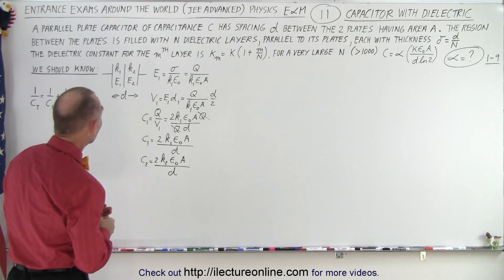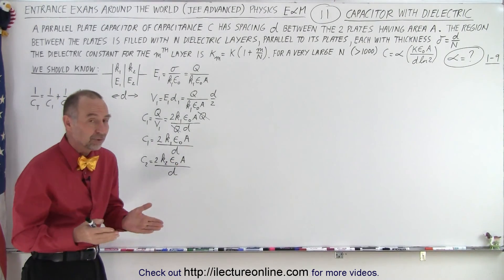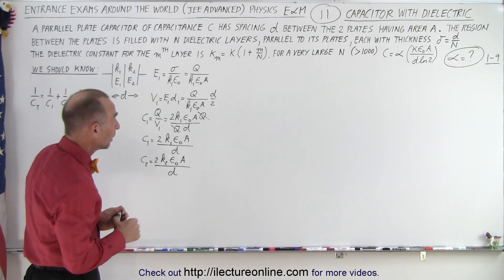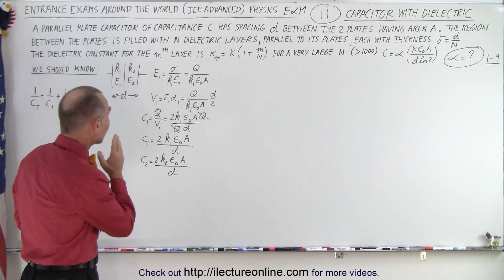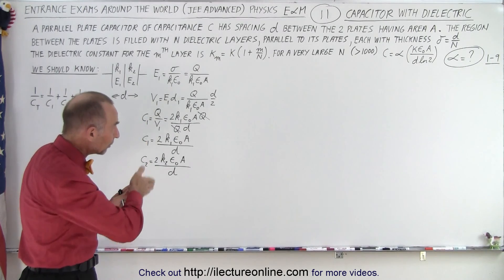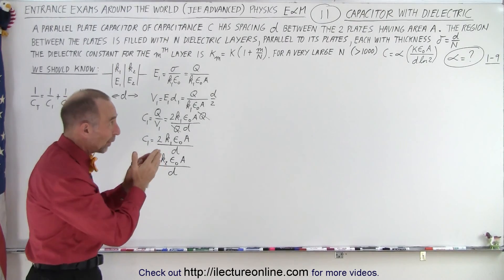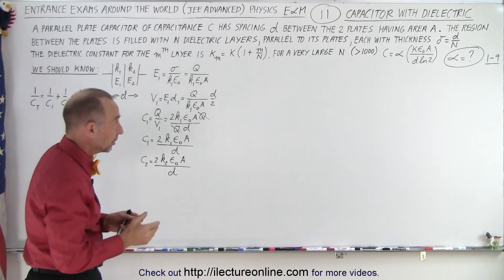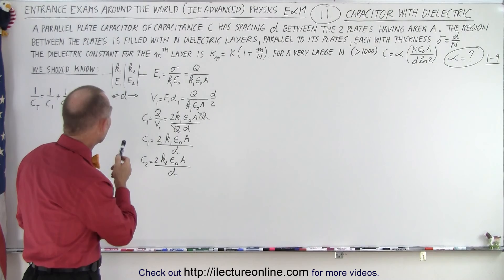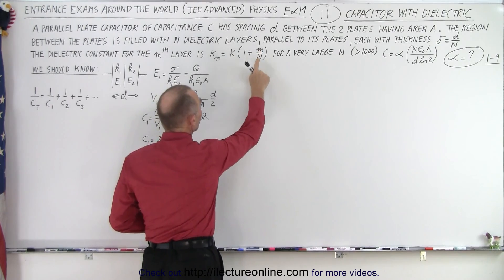We have a parallel plate capacitor of capacitance C with spacing D between two plates having area A. The region between the plates is filled with N dielectric layers, all parallel to the plates, each with the same thickness D over N. The dielectric constant for the mth layer is K_m, equal to a constant K times (1 + m/N).